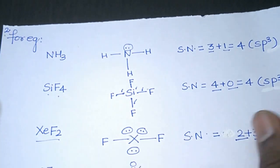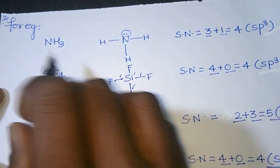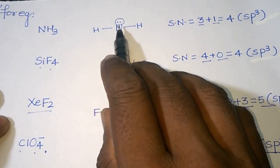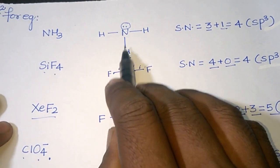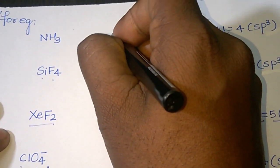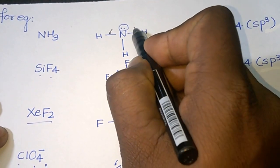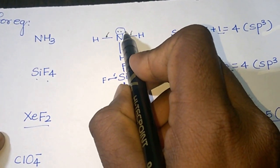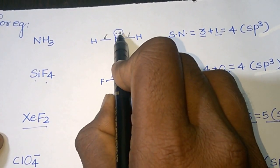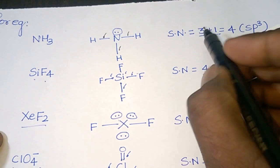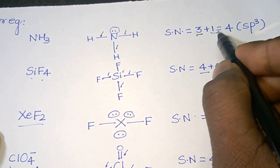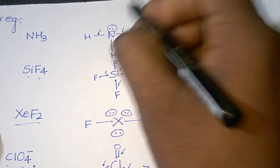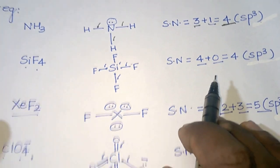Let's do some other examples. In ammonia, nitrogen is forming 3 sigma bonds with 3 hydrogen atoms. There are 3 sigma bonds and 1 lone pair that is localized on it. So the steric number is 3 plus 1 equal to 4, and the hybridization of this nitrogen is sp3.